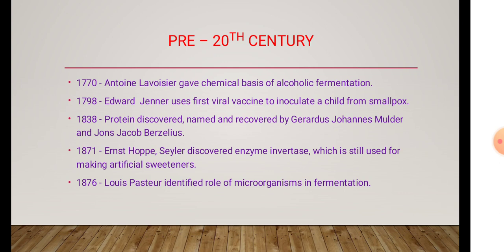In 1770, Lavoisier gave a basis for alcoholic fermentation — how the alcoholic fermentation process takes place with the help of chemical processes. In 1798, Edward Jenner developed the first viral vaccine to inoculate a child from smallpox. In 1838, protein was discovered by Gerardus Mulder and Jons Jacob Berzelius. In 1871, ANS Coppia Saylor discovered the enzyme invertase.